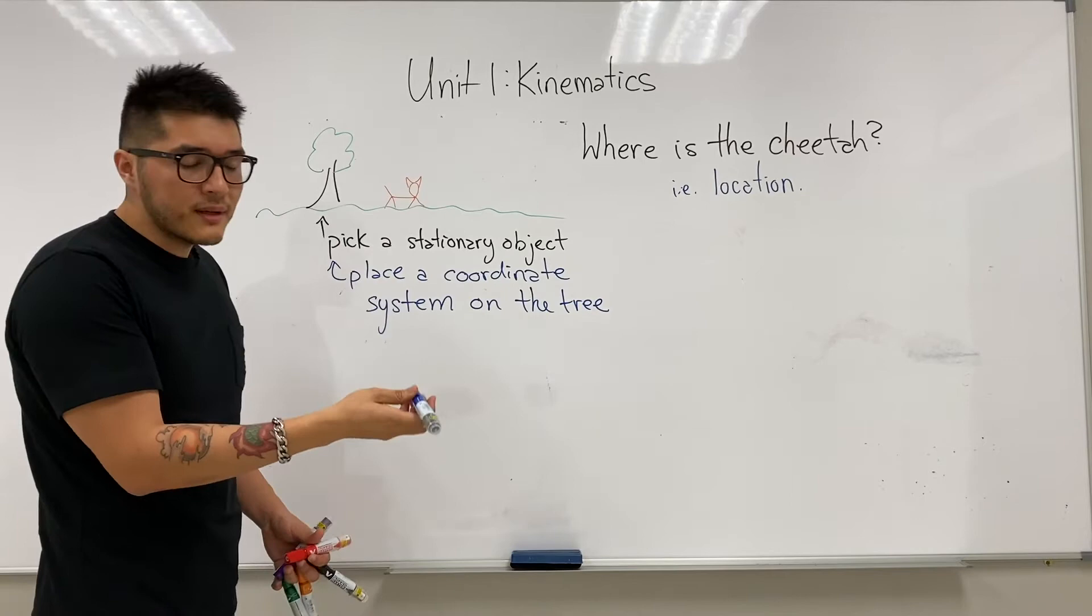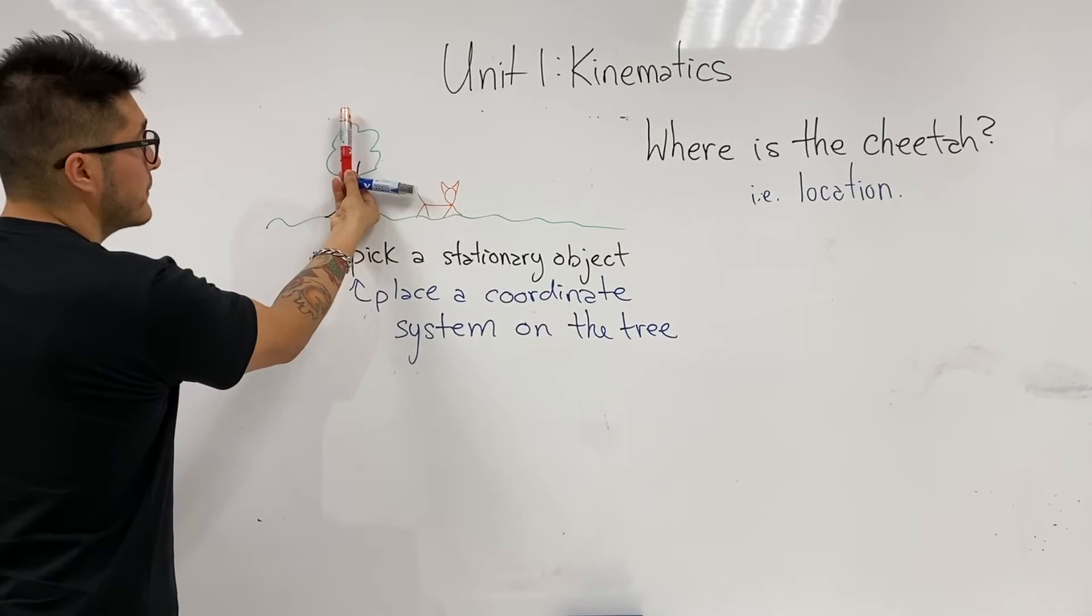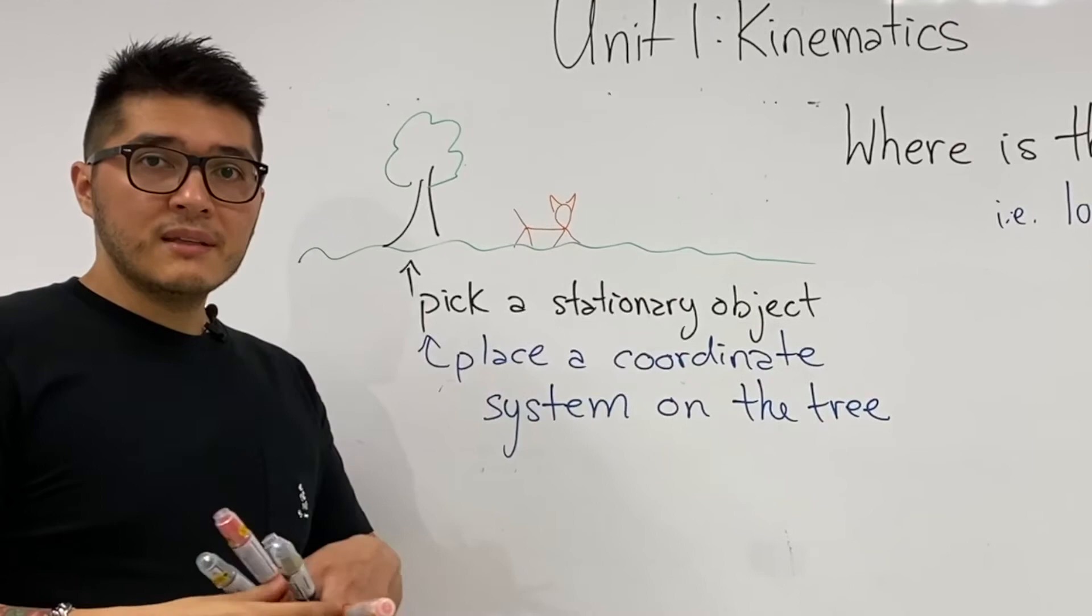Then it gets confusing. Well, if I can place a coordinate system—first of all, coordinate system is just your x and y plane that you study in math or in life. We can place our coordinate system at the bottom, midway, the top of the tree, anywhere on the tree. So the most convenient place is to place it at the bottom of the tree.